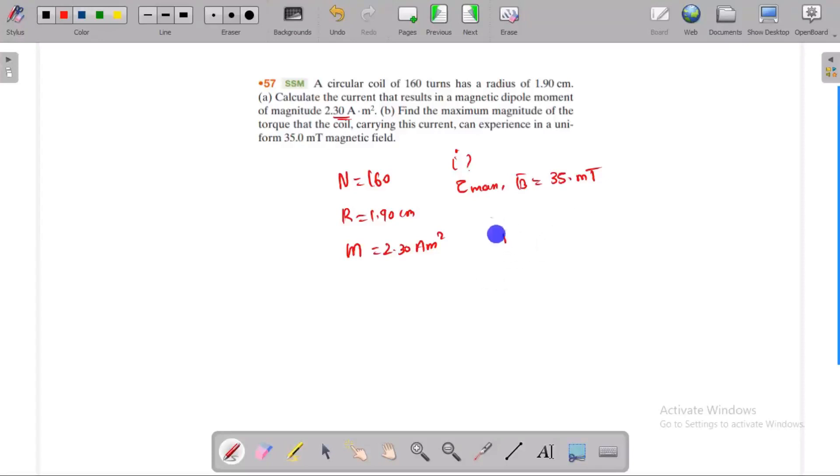The dipole moment is equal to number of turns times current times area. Number of turns is 160, and we don't know the current. The area is a circle, so area equals pi r squared: pi times 1.90 times 10 to the power minus 2, the whole squared. The dipole moment is given as 2.30.